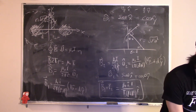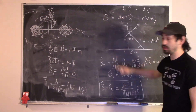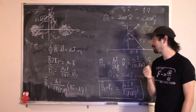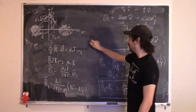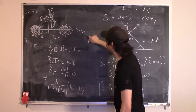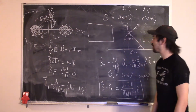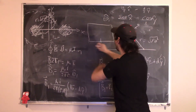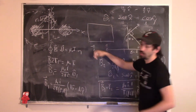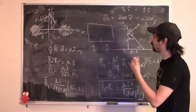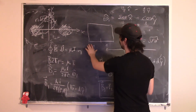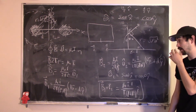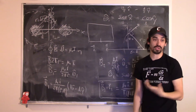A student asks why you can't use Biot-Savart on this one. You can — any question that uses Ampere's Law can also use Biot-Savart, it's just more complicated. For infinitely long wires, you'd change the limits of integration to go from negative infinity to positive infinity. But if you have the right symmetry, it's simpler to use Ampere's Law.